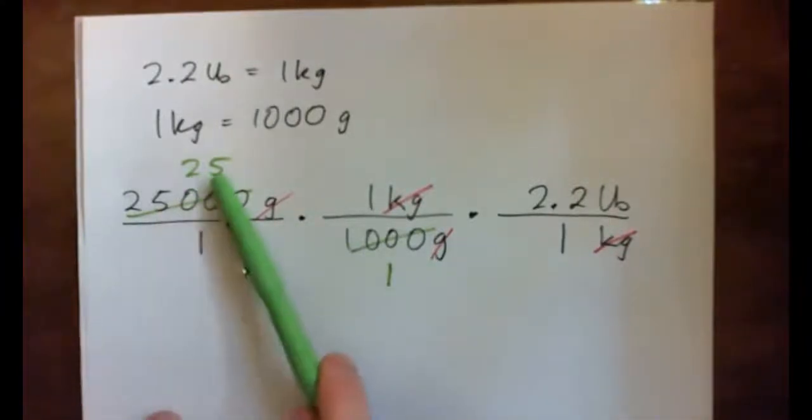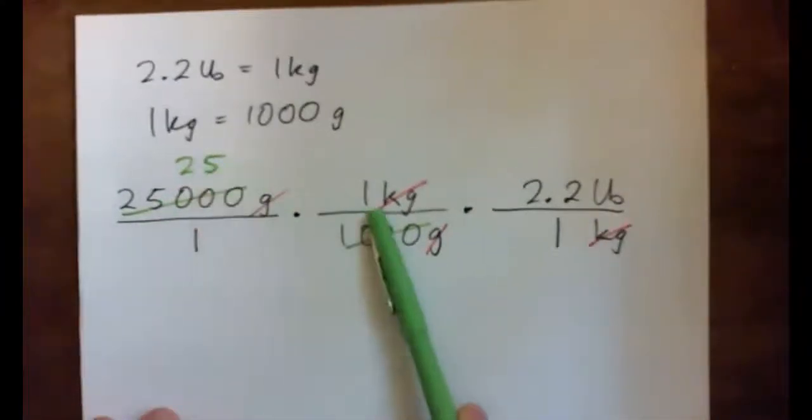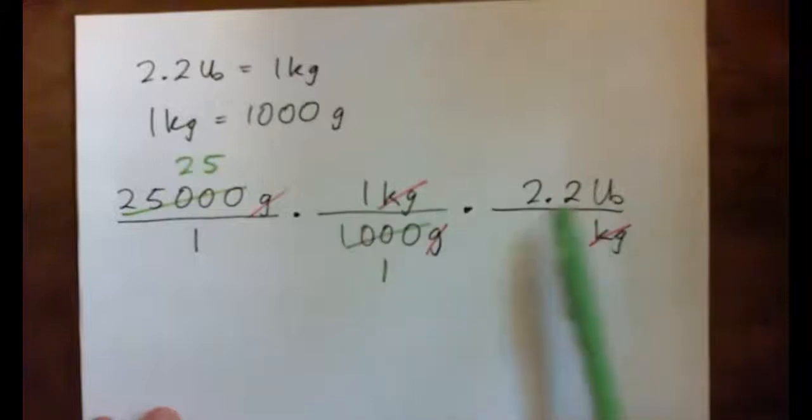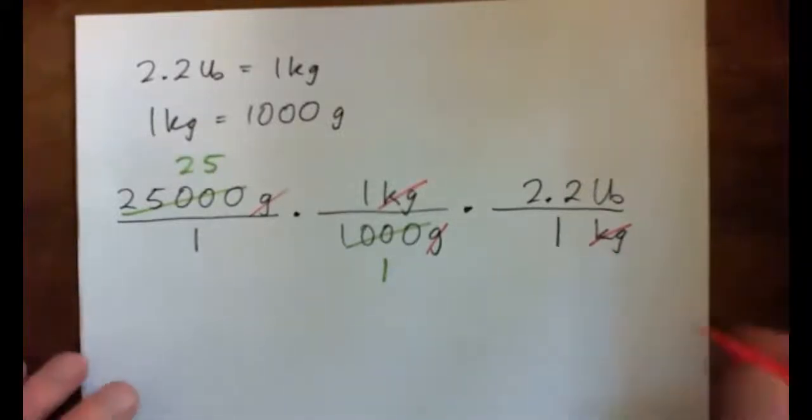So we end up with, on the top, we've got 25 times 1 times 2.2 pounds. And on the bottom, we have 1.